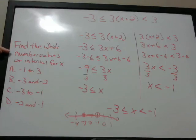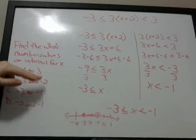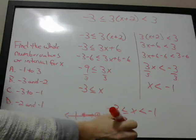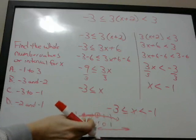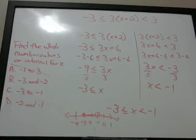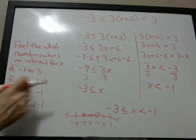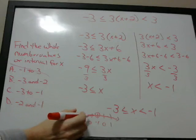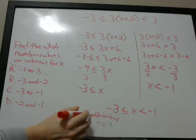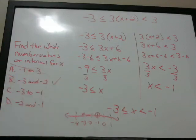Remember, it says find the whole numbers or the interval for x. So choice A is negative 1 to 3 — well, that would be out here, it's not negative 1 to 3, it's negative 3 to negative 1, so that's not the right answer. Choice B is negative 3 and negative 2, meaning those are the two whole numbers that fit. Negative 3 fits because x can equal negative 3, and negative 2 fits, so this actually is the right answer — but we'll look at the last two as well.